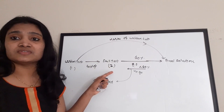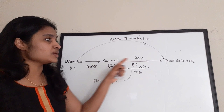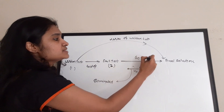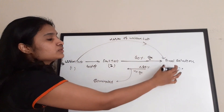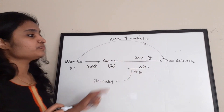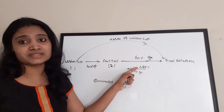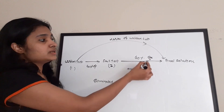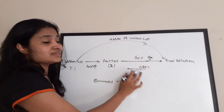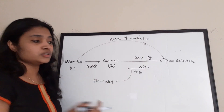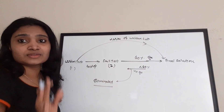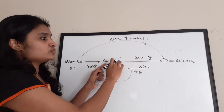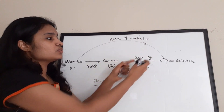If you get the cutoff mark in the written test, you are called for the second stage — the skill test. In the skill test, you do laboratory experiments and give a viva. Out of 100 marks, you need 60% (60 marks) to pass. If you get 60 marks, it is a 'go' — you proceed to final selection. If you score less than 60%, it is a 'no go' and you are eliminated.